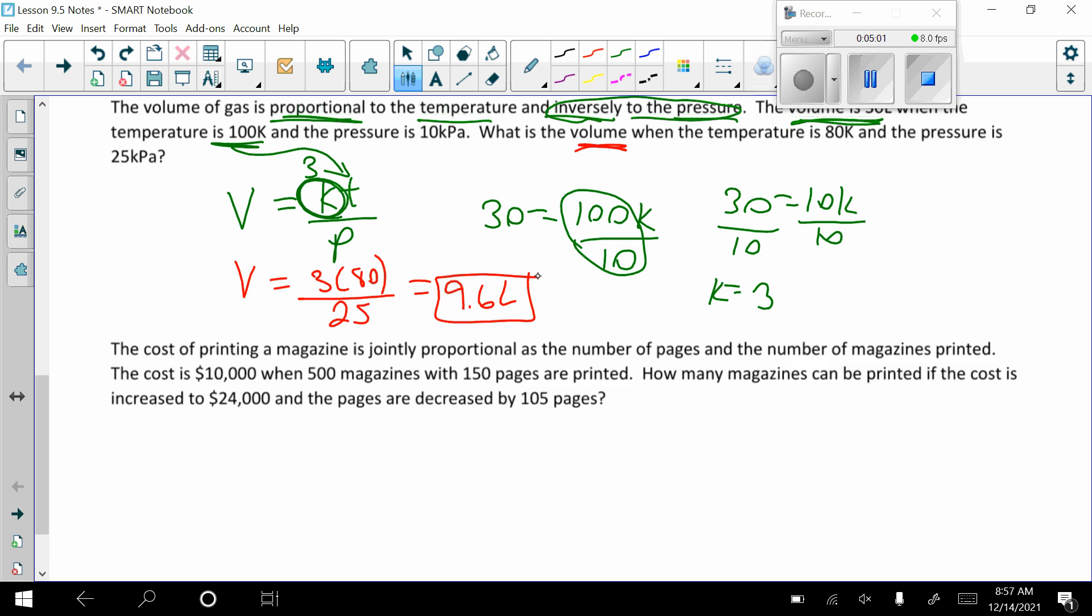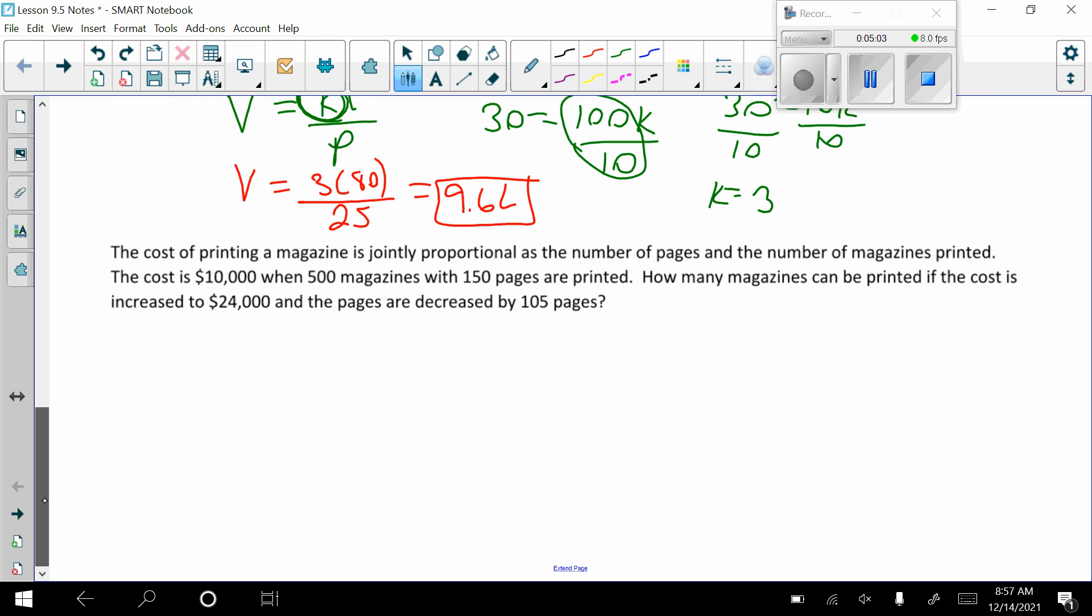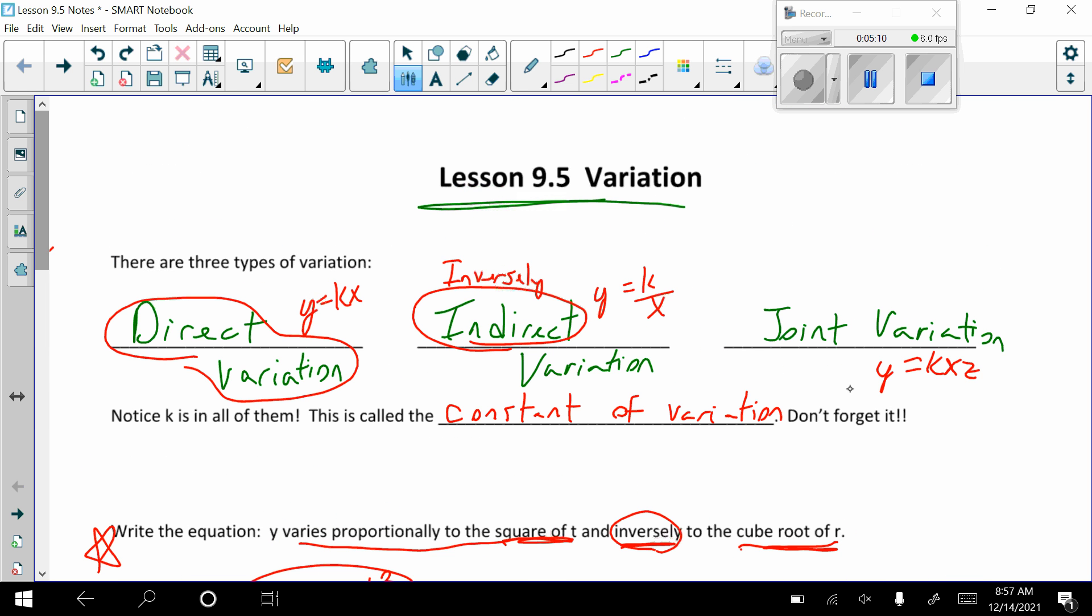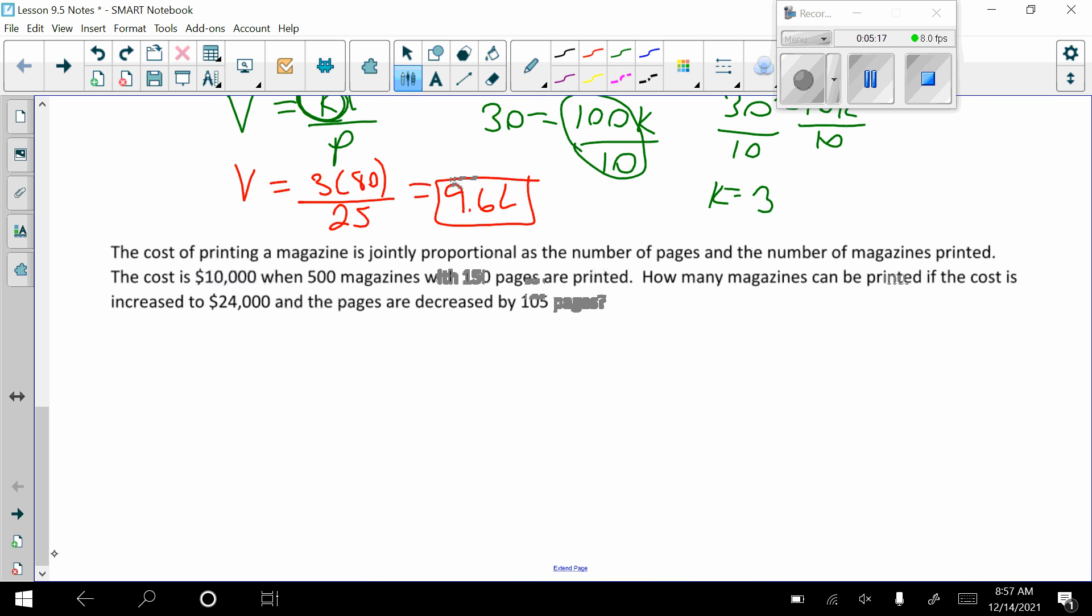Okay. Let's do the next one. So the cost of printing a magazine is jointly proportional. So that means that there's other stuff going on in the equation. So we'll have multiple, it's kind of like multiple direct variation, if you will. As a number of pages and number of magazines printed. So let's call this cost. And then we always have that K. Number of pages, I'll call P. Number of magazines, I'll call M.